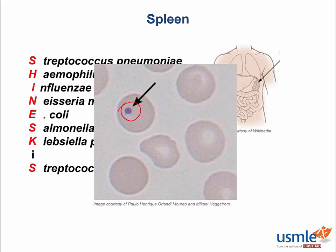These inclusions are called Howell-Jolly bodies. They are the nuclear remnants from immature RBCs. Normally, the spleen is supposed to filter out this material.